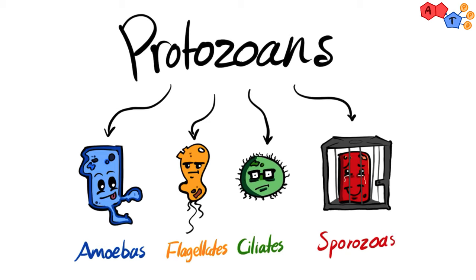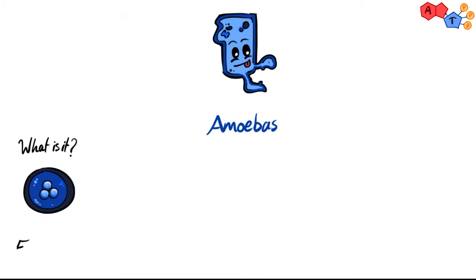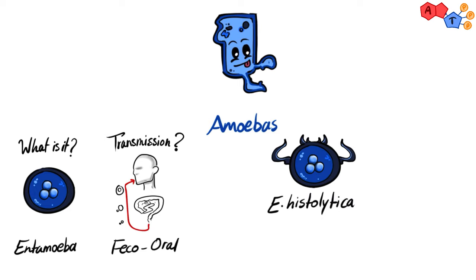Because sporozoa can't move, they are obligate intracellular parasites. The first important medical protozoan belongs to the amoebas — Entamoeba — mainly transmitted via the fecal-oral route, meaning you ingest either contaminated water or contaminated food. Entamoeba has different species that infect humans; however, we're concerned with Entamoeba histolytica due to its pathogenic characteristics.